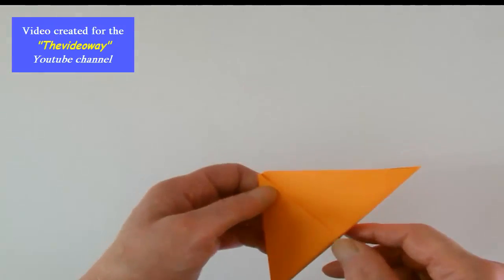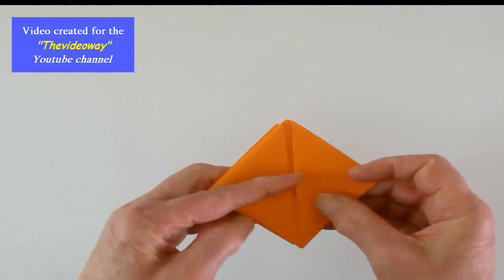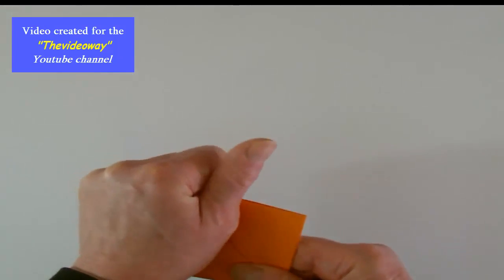Now lift up and open out the pocket again. And again the top will fall down on itself. So now we end up with a smaller diamond shape.